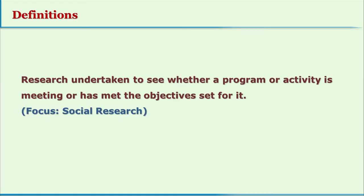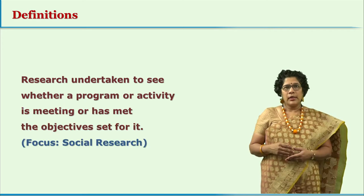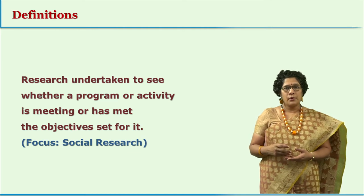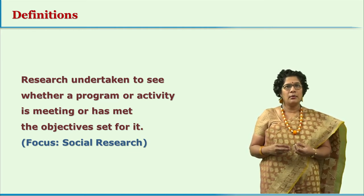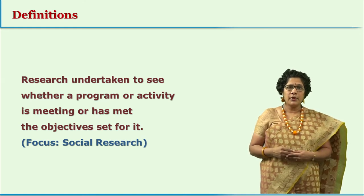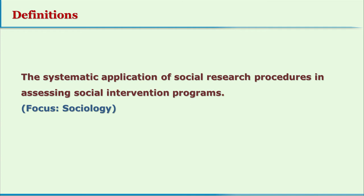The first definition: research undertaken to see whether a program or an activity is meeting or has met the objective set for it. This definition has the focus of social research. The second definition: the systematic application of social research procedures in assessing social intervention programs. In this definition, social intervention programs are in focus, so this definition is from the sociology angle.